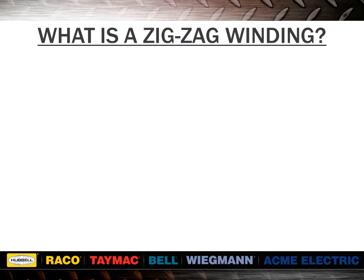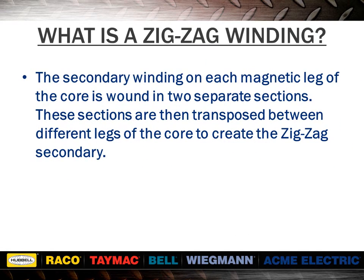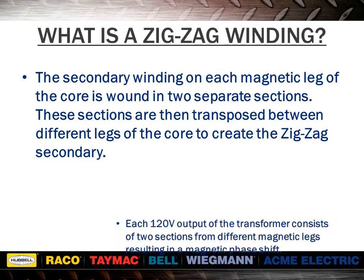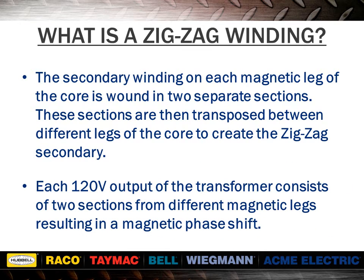The secondary winding on each magnetic leg of the core is wound in two separate sections. These sections are then transposed between different legs of the core to create the zigzag secondary. Each 120-volt output of the transformer consists of two sections from different magnetic legs, resulting in a magnetic phase shift.